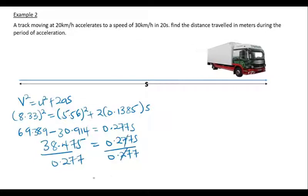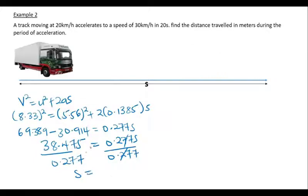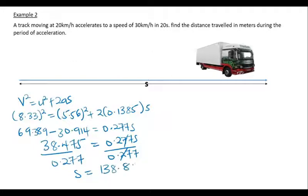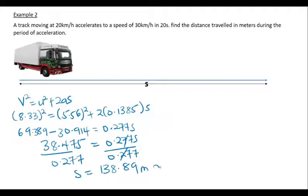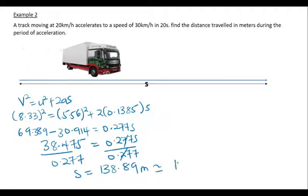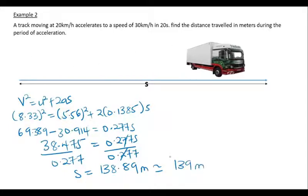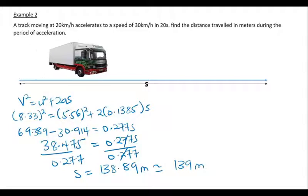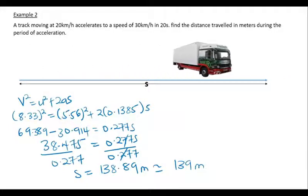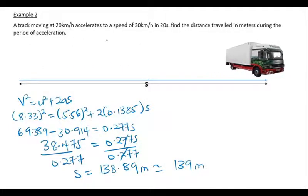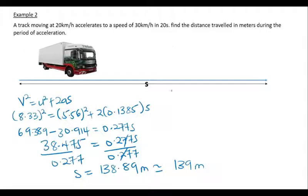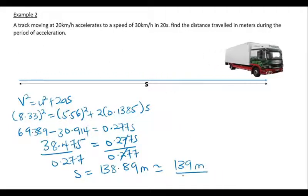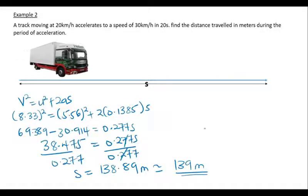We get S = approximately 138.89 meters, or approximately 139 meters. So the distance traveled by the truck as it accelerates from 20 km/h to 30 km/h over 20 seconds is approximately 139 meters.